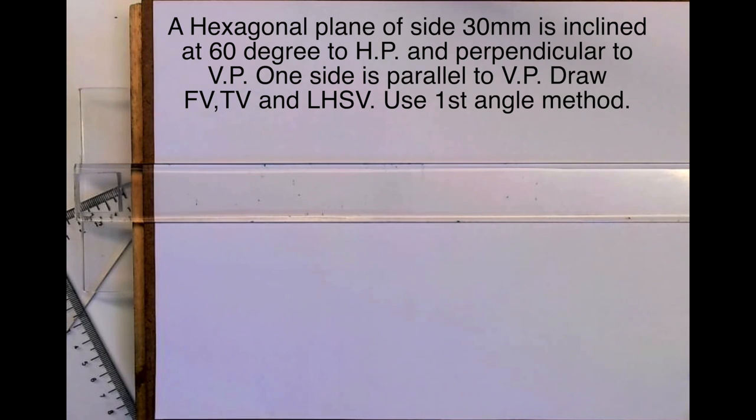Welcome to technical drawing. Today we'll see a hexagonal plane of side 30mm inclined at 60 degrees to HP and perpendicular to VP. One side is parallel to VP. Draw front view, top view, left-hand side view, and use first angle method.